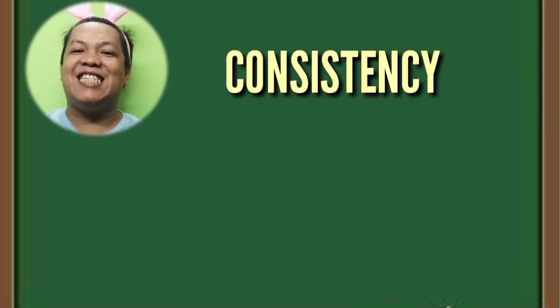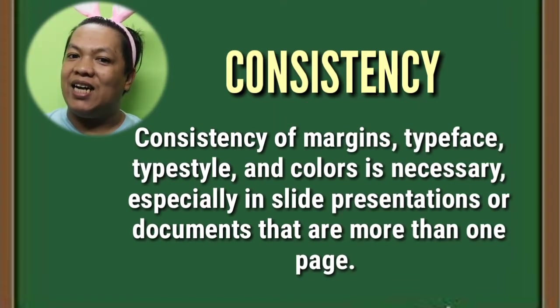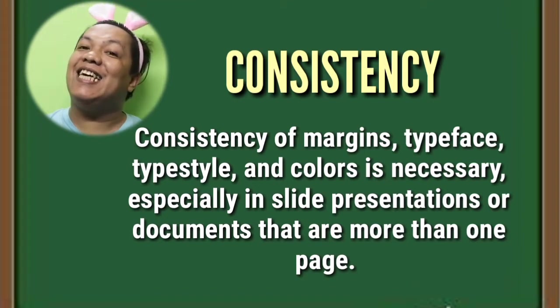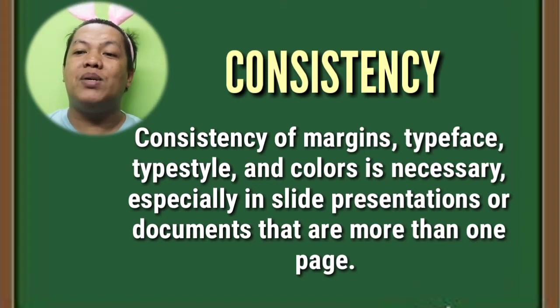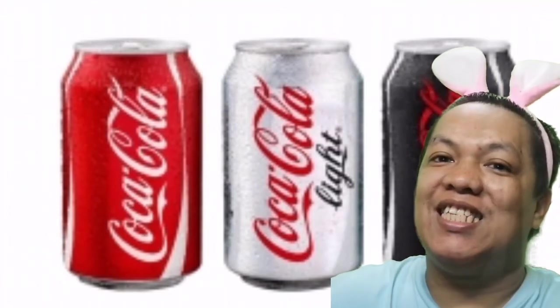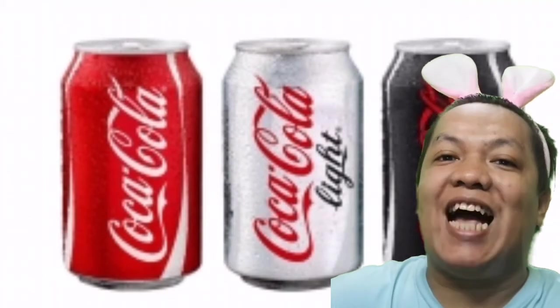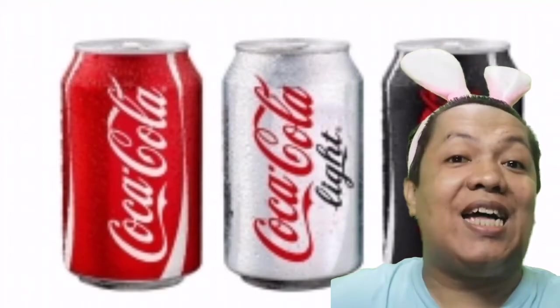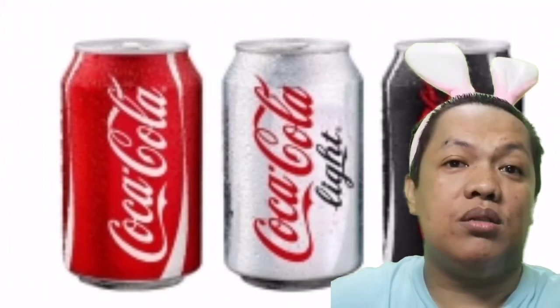The very first visual design element refers to consistency. Consistency of margins, font size, font style, and colors is necessary, especially when making PowerPoint presentations or documents that are more than one page. For example, observing all products of Coca-Cola Philippines — no matter how they change their designs, the Coca-Cola logo font style remains the same since it started its first business operations until today, 2021.